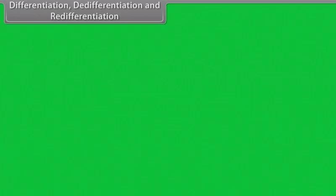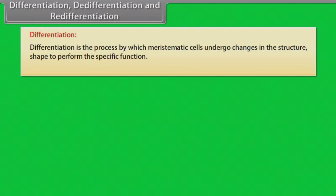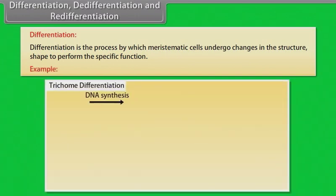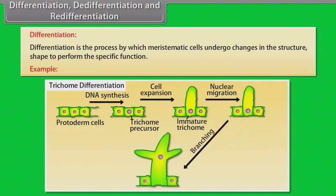Differentiation. Differentiation is the process by which meristematic cells undergo changes in the structure and shape to perform specific functions. For example, after the DNA synthesis of the protoderm cells, cell expansion takes place and it forms immature trichome. After that, nuclear migration takes place, then branching occurs, and then it reaches to maturation stage.